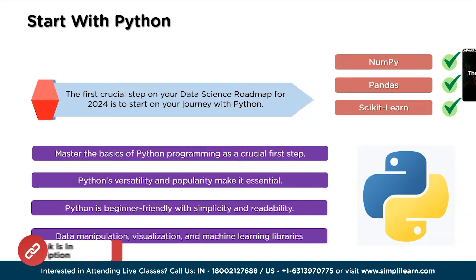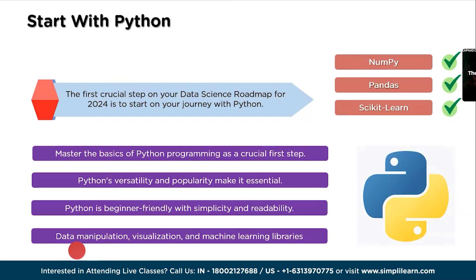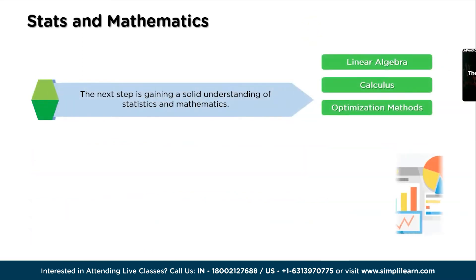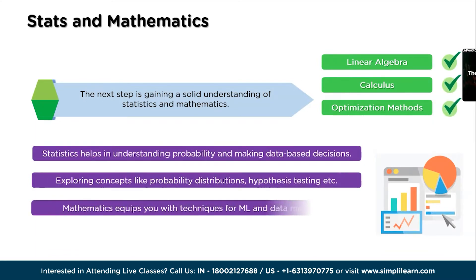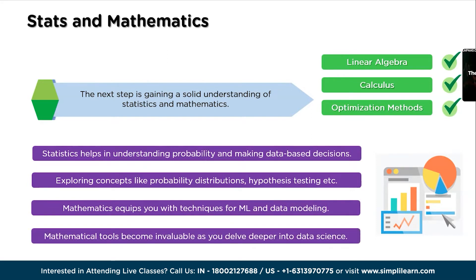You can also check the Python playlist where all essential topics are covered. The next step on the data science roadmap is stats and mathematics. Gaining a solid understanding of statistics and mathematics is crucial — these disciplines serve as the backbone of data analysis, helping you make sense of complex datasets and derive meaningful insights. Statistics provide the tools to summarize and interpret data, understand probability, and make informed decisions based on data patterns.